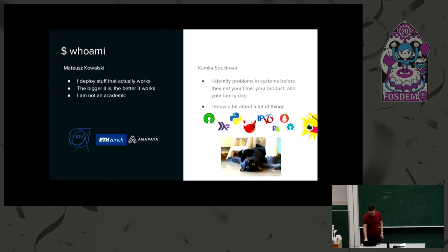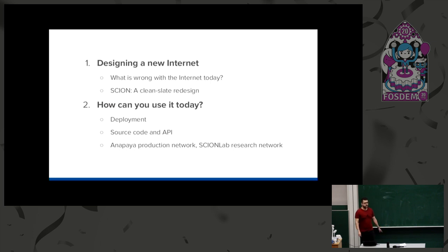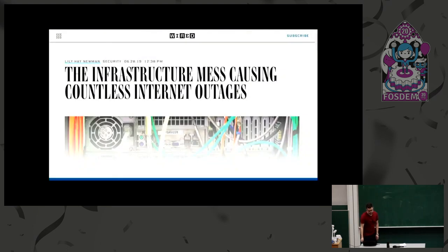I will skip this slide because of the timing. So, what we are doing — we are designing the new internet because there is a fundamental problem with the current internet. We are doing this in a clean-slate approach, redesigning it, but also making it work on current infrastructure for mixed deployments. This is one of the snapshots of articles from Wired: infrastructure mess causing countless internet outages.